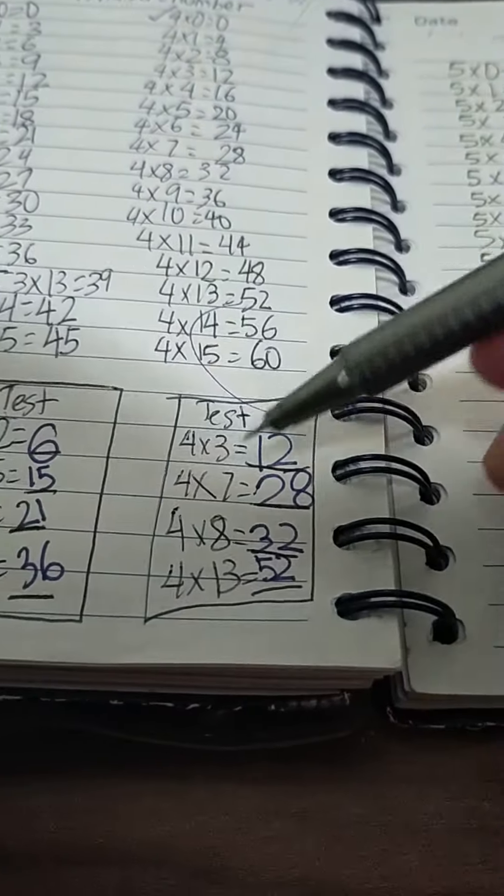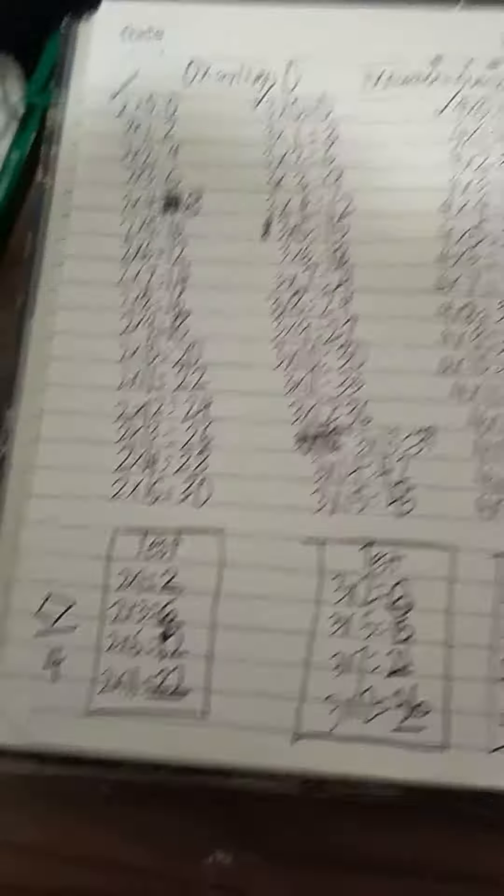Now we're done with the four times table. Hope you memorize the first page of the book. Now it's time for the second page.